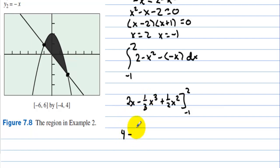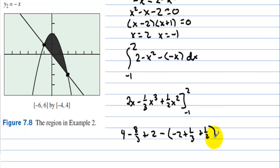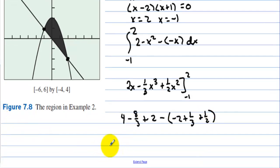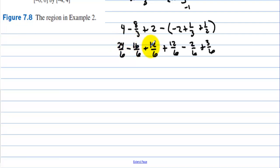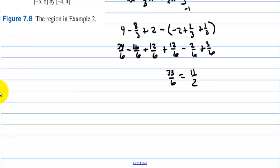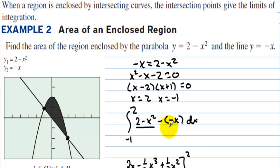Plugging in: 2(2) = 4, minus 8/3, plus 4/2 = 2, then minus [−2 + 1/3 + 1/2]. With a common denominator of 6 we get 24/6 − 16/6 + 12/6, plus 12/6, minus (−12/6 + 2/6 + 3/6). Working through: 24 − 16 = 8, giving 33/6 = 11/2. The answer is 11/2 — we took top minus bottom after finding where the graphs intersect.